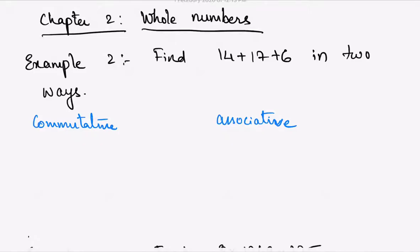Let us now solve an example from Chapter 2, Whole Numbers. Find 14 + 17 + 6 in two ways. We can do this using two properties: commutative and associative.